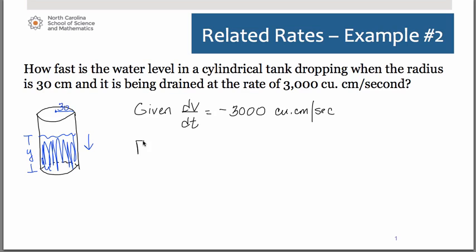Now what we're trying to find is how fast is the water level dropping. So that would be dy/dt at the point in time when r equals 30. You might be saying to yourself, well, r is always going to be 30. You are correct. And so that's something we're going to take into account when we set up our equation.